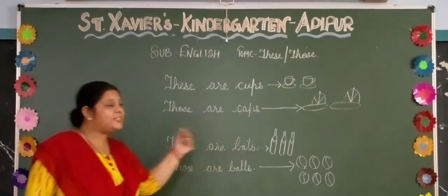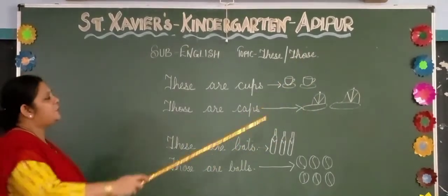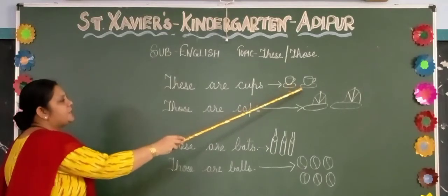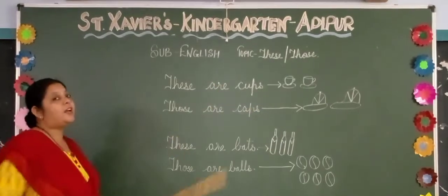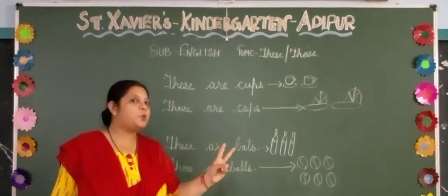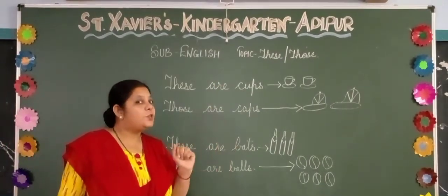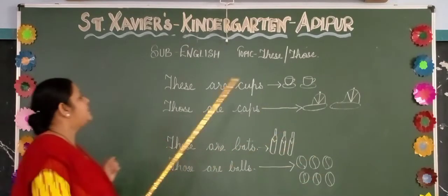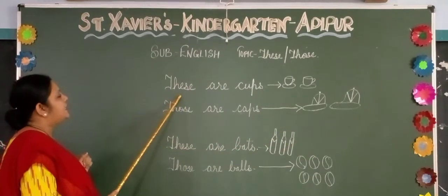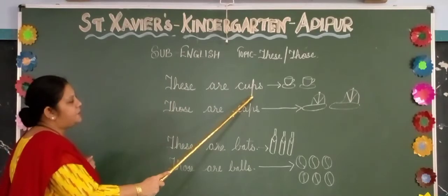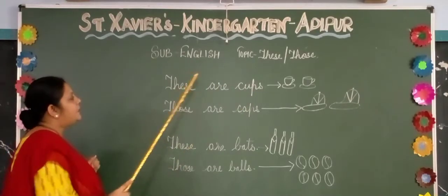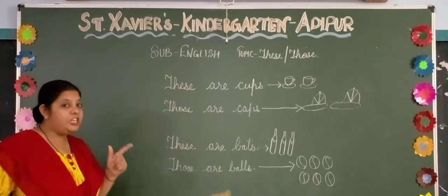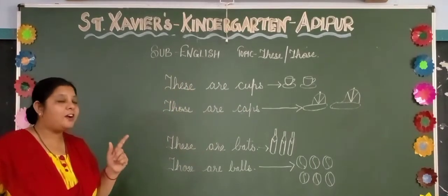So let's see how it is. You can see these pictures. How many cups are there? Count them — two cups. So what will we say? We will say 'these are cups.' T-H-E-S-E are cups.